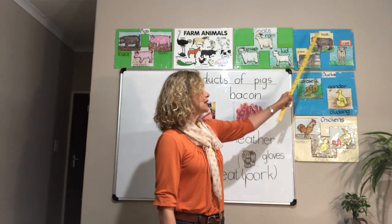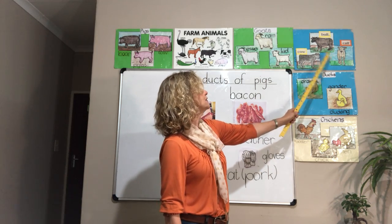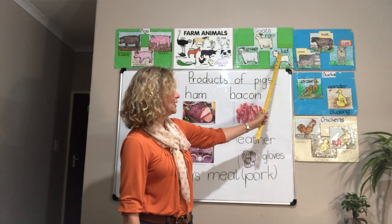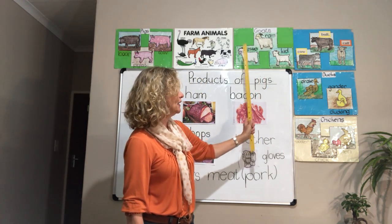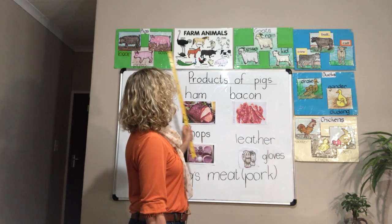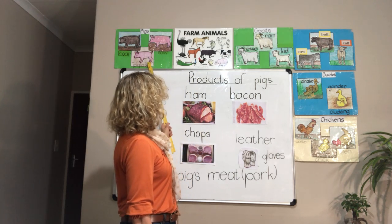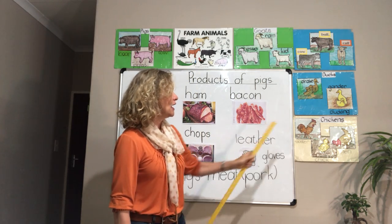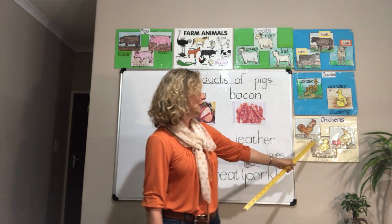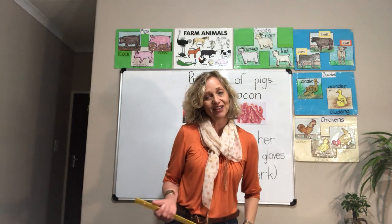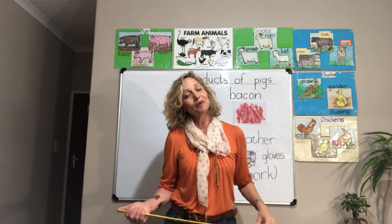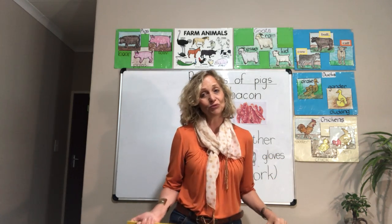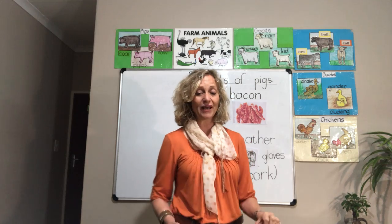Cattle give us red meat, sheep give us red meat, and pigs give us red meat. But when we get to chicken and fish, that would be white meat.